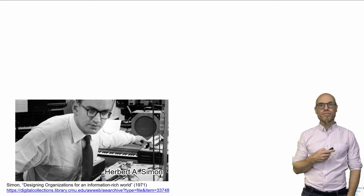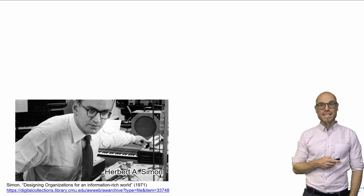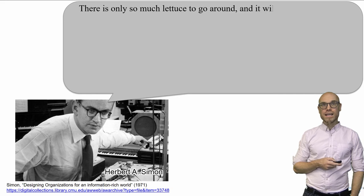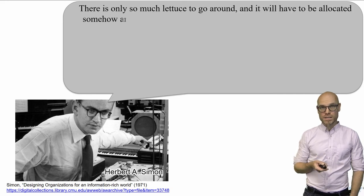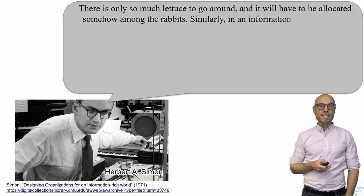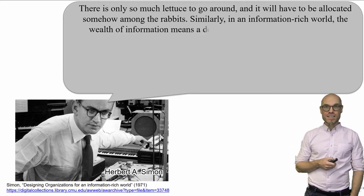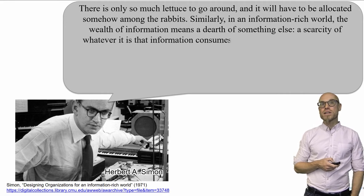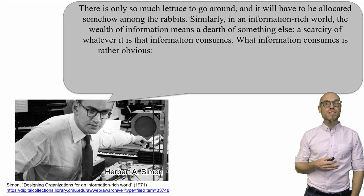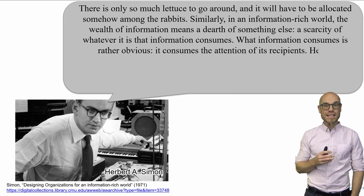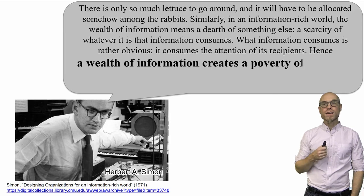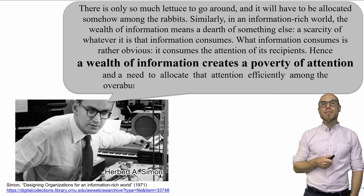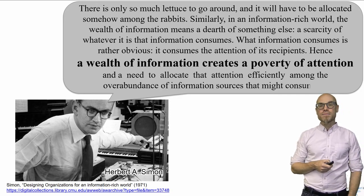He used an analogy when he first talked about it back in the 70s, so that's from 1971. He said, well, there's only so much letters to go around and it will have to be allocated somehow among the rabbits. Similarly, in an information-rich world, the wealth of information means a dearth of something else — a scarcity of whatever it is that information consumes. What information consumes is rather obvious: it consumes the attention of its recipients. Hence, a wealth of information creates a poverty of attention, and we need to allocate that attention efficiently among the overabundance of information sources that might consume it.